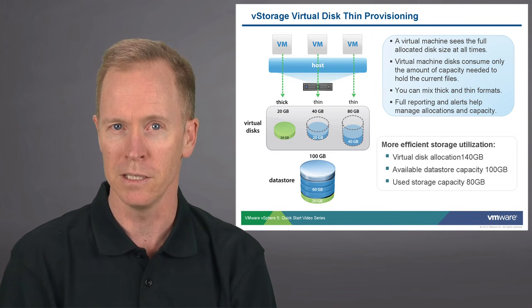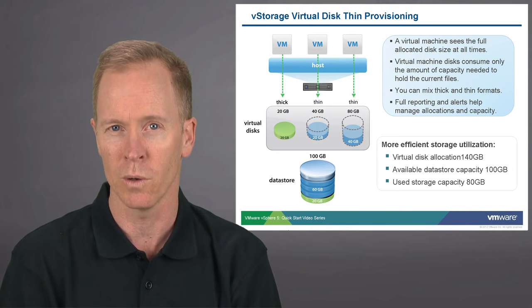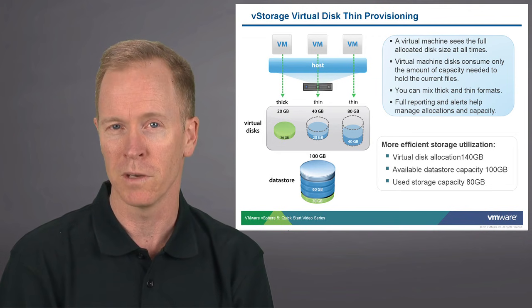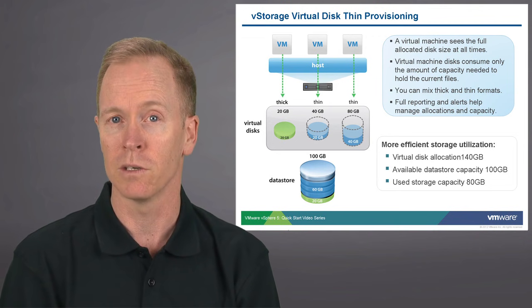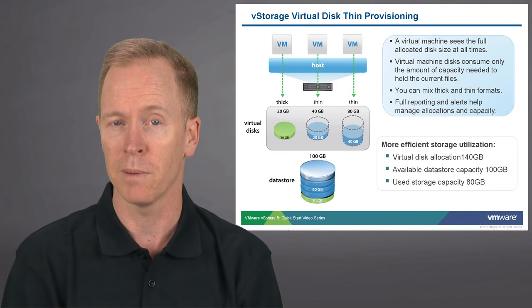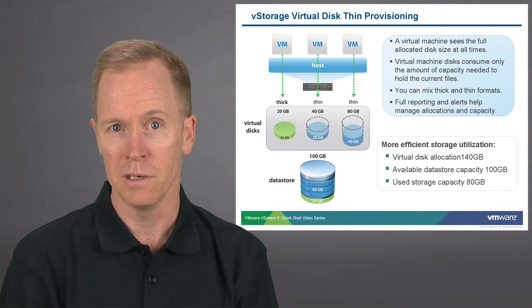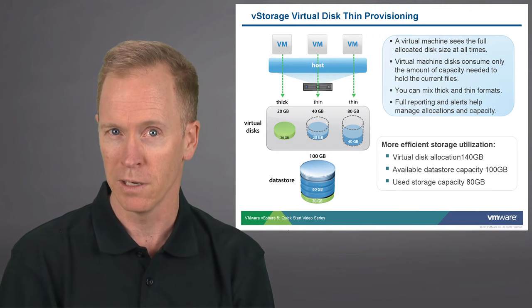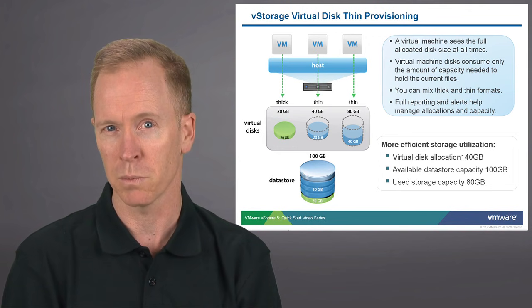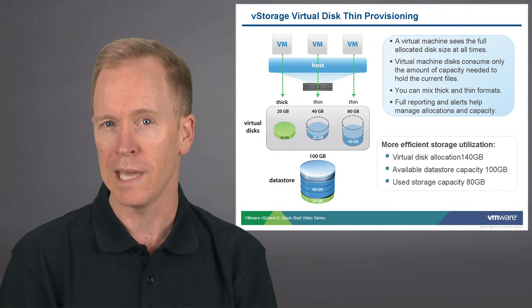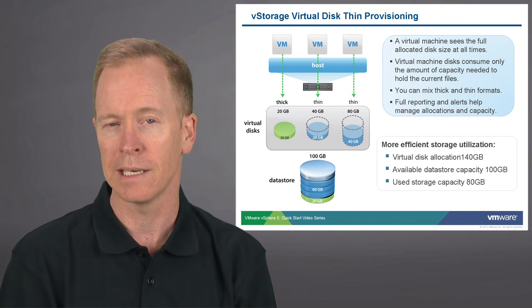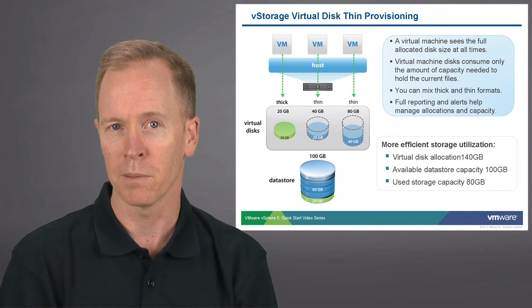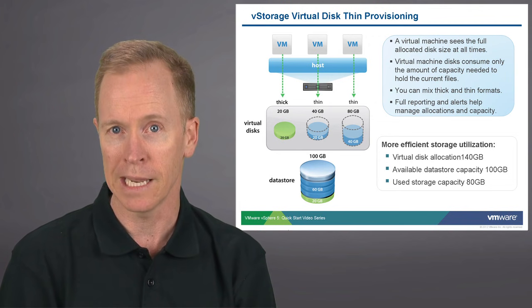So far, we have 40 gigabytes total. That third virtual disk, which is also thin-provisioned, is only using an additional 40 gigabytes. So if you add the actual amounts of storage allocated thus far — 20 gigabytes plus 20 gigabytes plus 40 gigabytes — that's only 80 gigabytes. And 80 gigabytes of disk space will fit within a 100-gigabyte VMFS data store.